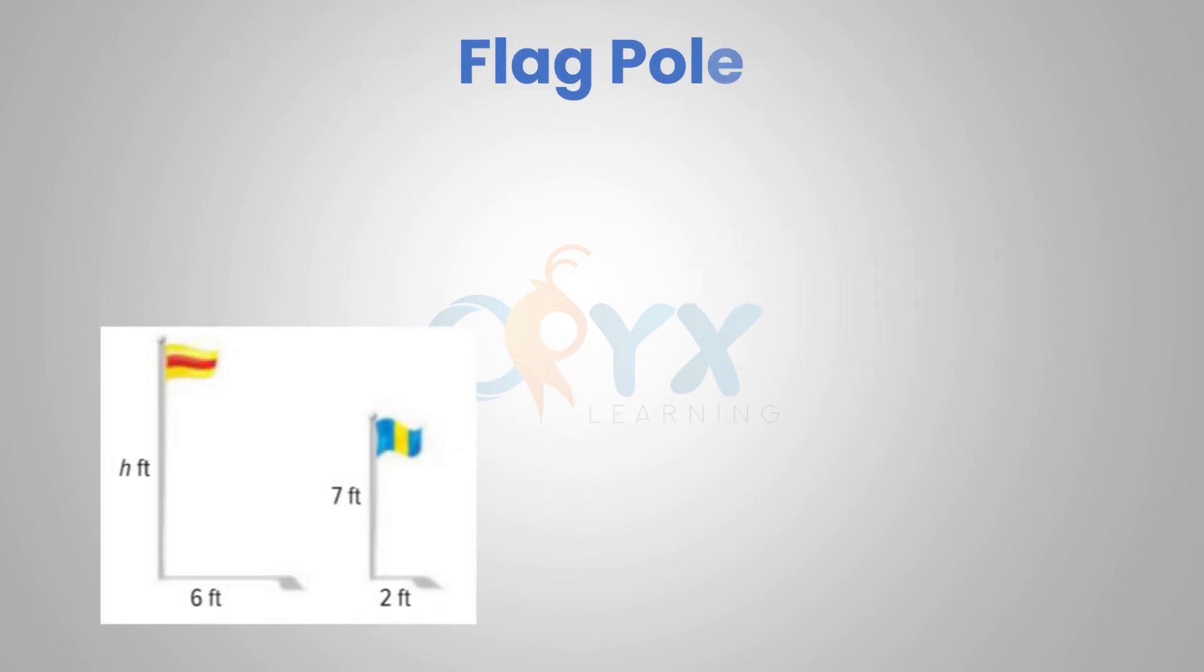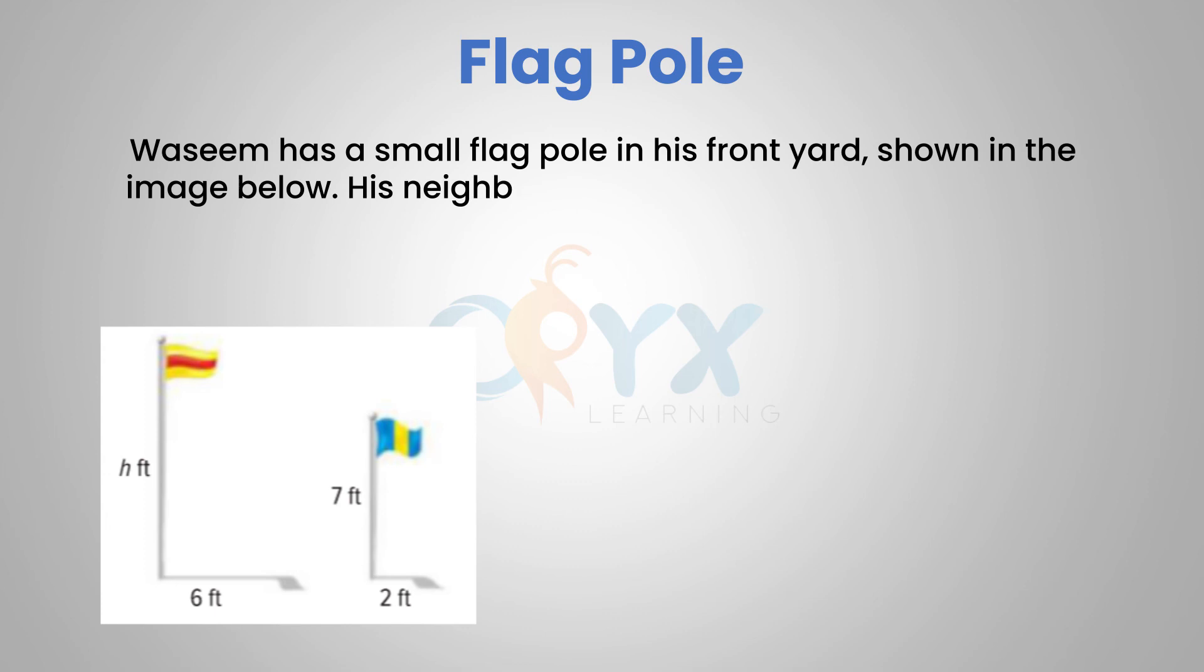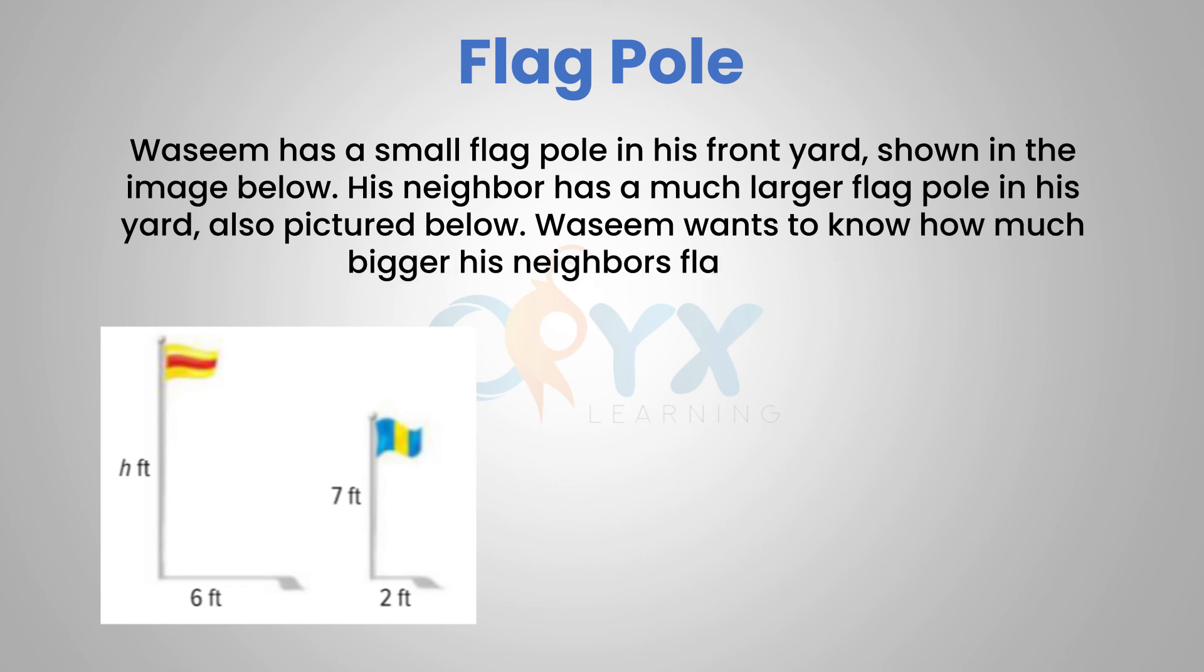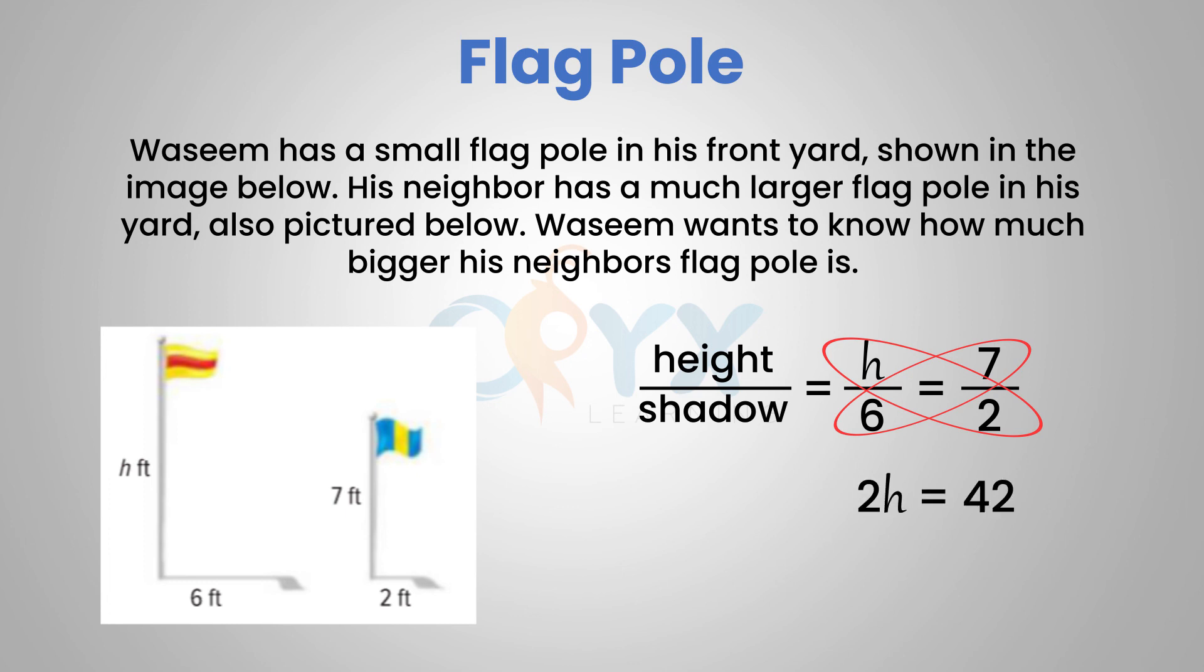Now back to our original question. Waseem has a small flagpole in his front yard, shown in the image below. His neighbor has a much larger flagpole in his yard, also pictured below. Waseem wants to know how much bigger his neighbor's flagpole is. Let's set up a proportion comparing the height to the shadow, which would give us h over 6 equals 7 over 2. Cross multiplying gives us 6 times 7 and h times 2. So we can set up the equation 2h equals 42. Dividing both sides of the equation by 2 will give us h equals 21 feet. So Waseem's neighbor has a flagpole that is 21 feet tall.